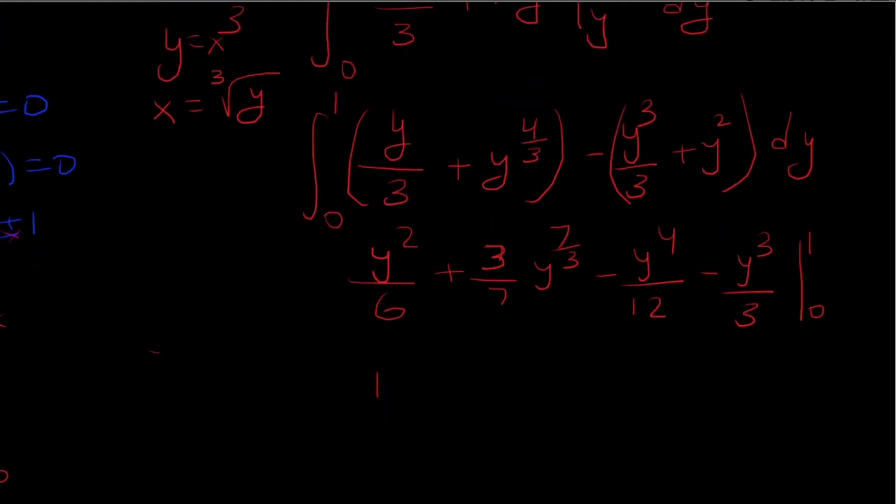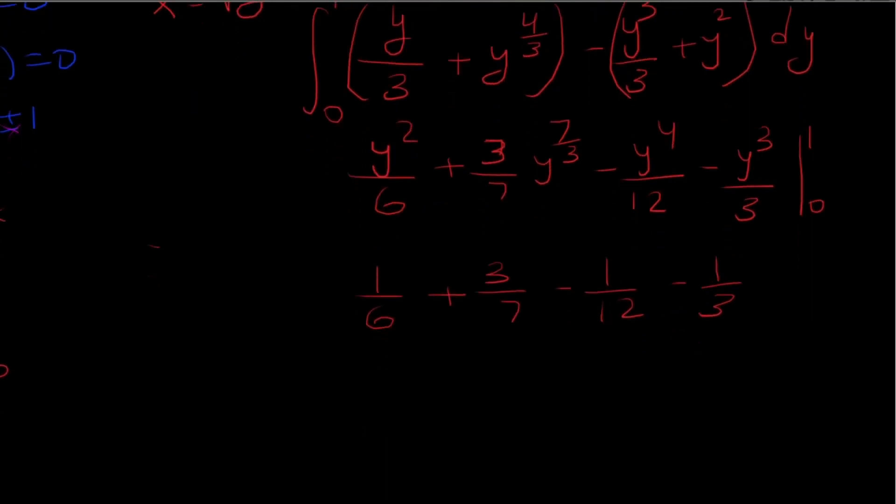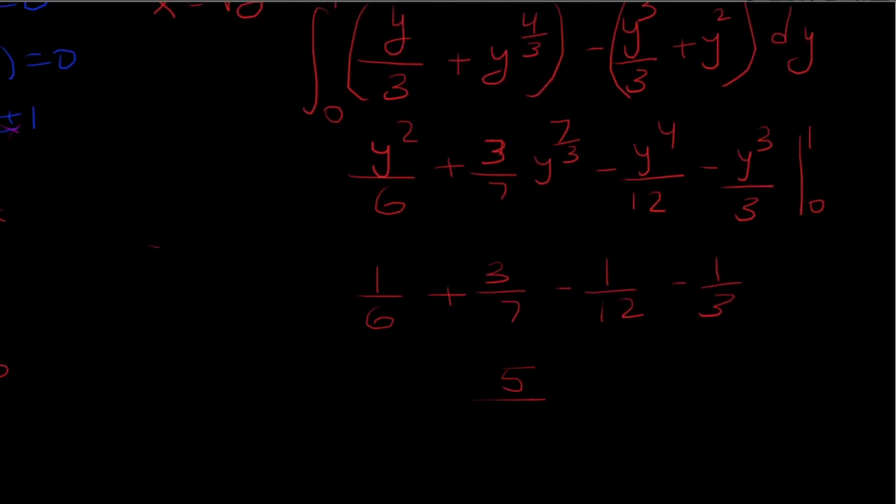So I'm going to plug in 1 to get 1 sixth plus 3 sevenths minus 1 twelfth minus 1 third. And if I plug in 0 I just get 0 so I'm not going to bother with that. And this simplifies to 5 over 28, and that's my final answer.